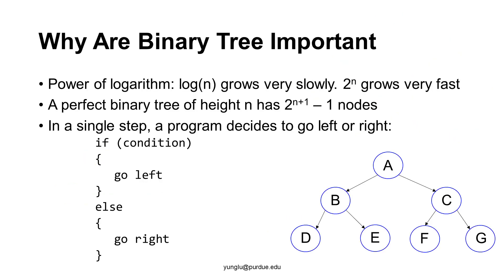Binary tree is very important because of its performance. Logarithm grows very slowly while exponent grows very fast. If a perfect binary tree has height n, then the tree has 2^(n+1) - 1 nodes. If a tree has height zero, there is only one node, the root. If a tree has height one, the tree has the root and its two children, totally three nodes. In this example, the tree has height two and the tree has seven nodes.